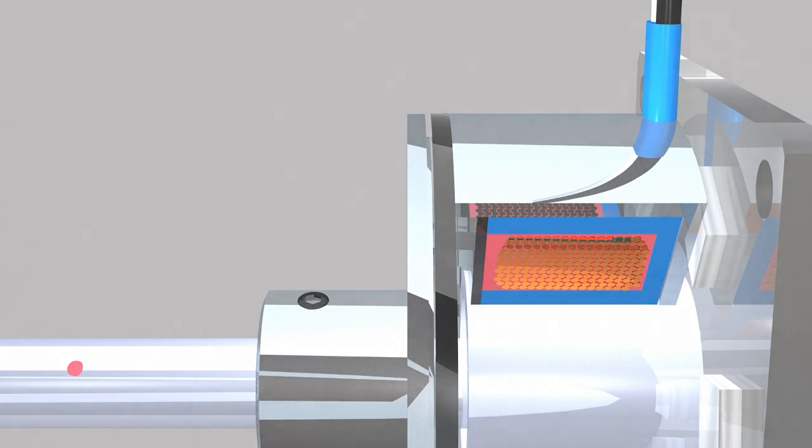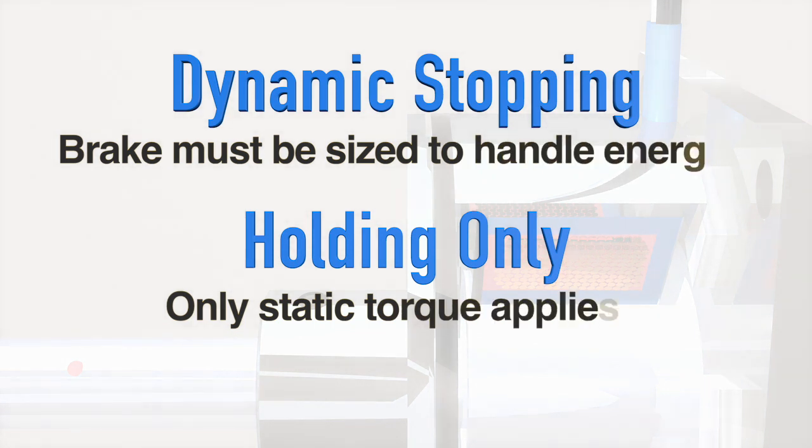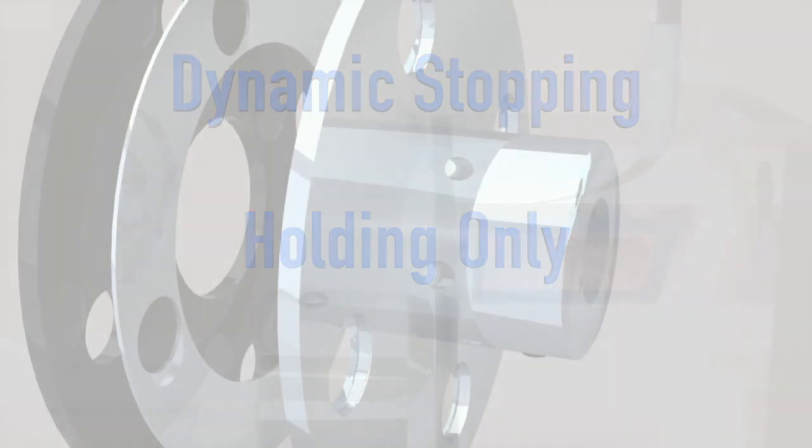The difference between the two is that during dynamic stopping, heat is generated, so the brake has to be sized to handle the energy during braking. With a holding-only application, only the static torque needs to be considered.